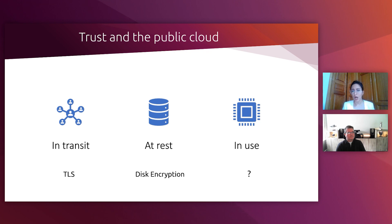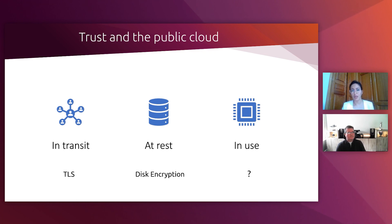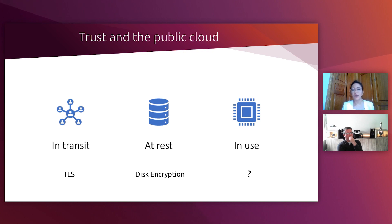We trust that all of you have already adopted industry standards when sending your data over the network. And when it is stored in the public cloud — specifically talking about secondary storage when your data is passive, basically on the hard disk — we trust that most people know they need to encrypt data at rest, and that encryption keys need to be either protected at the client side or in some sort of hardware HSM at the public cloud provider's infrastructure.